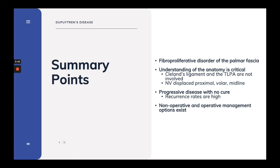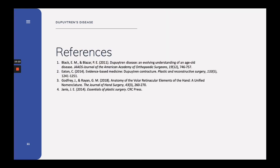In summary, Dupuytren's is a fibro-proliferative disorder of the palmar fascia. In order to understand Dupuytren's, understanding of anatomy is absolutely critical. Remember that Cleland's ligament and the transverse ligament of the palmar aponeurosis are not involved, and the neurovascular bundle is displaced proximal, volar, and midline. Dupuytren's is a progressive disease with no cure at this time, and recurrence rates are high, although non-operative and operative management options do exist. Thank you for taking the time to listen to this presentation.